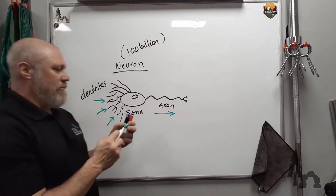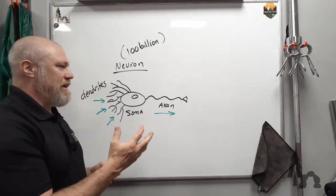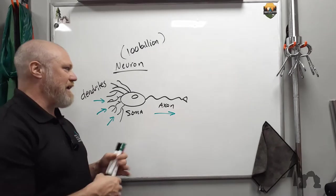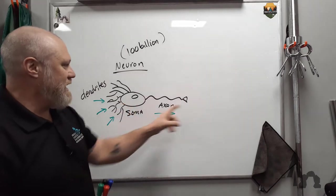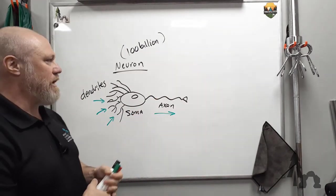Dendrites can be input from other sensory receptors, like touch, thermoreceptors, chemoreceptors, that kind of thing. And then the axons will convey that information to one or more other neurons or collections of neurons.